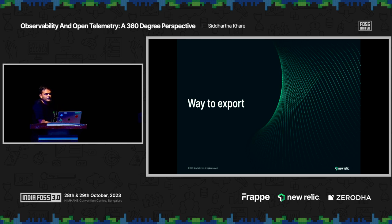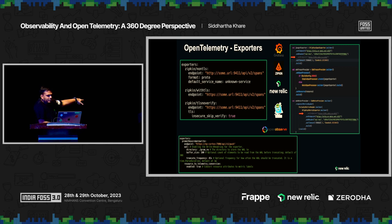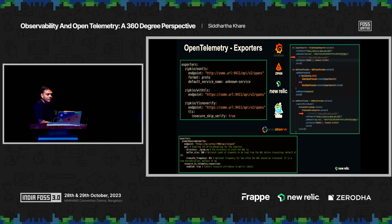Let's see how we can export the data. I have three examples: first is Zipkin and its endpoint to export the data; second is Prometheus endpoint to collect the data; and the third is an observability platform endpoint — I am leveraging New Relic's endpoint to export the data. All this data, whatever we are capturing, is using OpenTelemetry, and we are using one or another endpoint to export it.